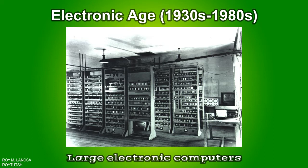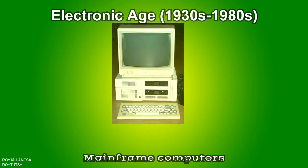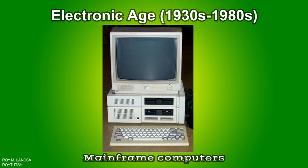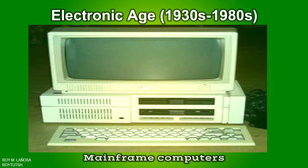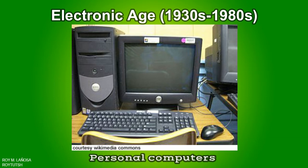ENIAC was Turing-complete and able to solve a large class of numerical problems through programming. Mainframe computers — example: IBM 704 (1960), also known as 'big iron' — are computers used primarily by large organizations for critical applications, bulk data processing such as census, industry and consumer statistics, enterprise resource planning, and transaction processing. Personal computers are multi-purpose computers whose size, capabilities, and price make them feasible for individual use, intended to be operated directly by an end user rather than a computer expert or technician, unlike large costly minicomputers and mainframes.